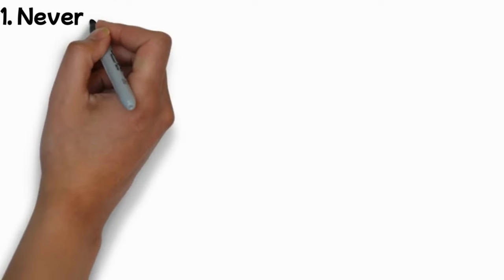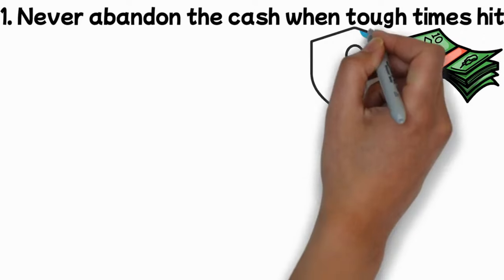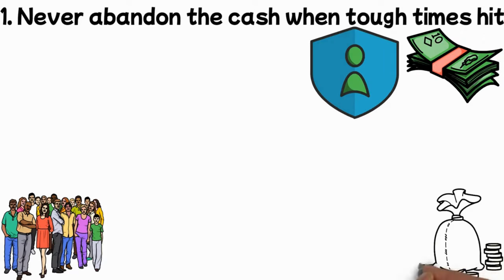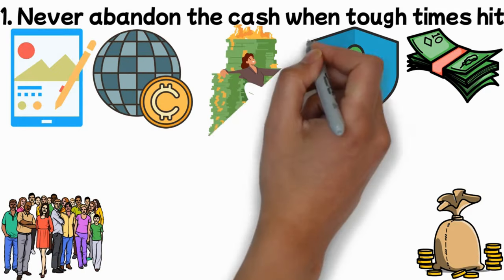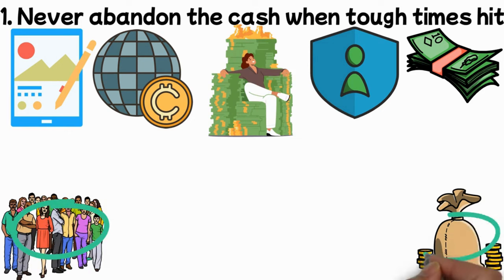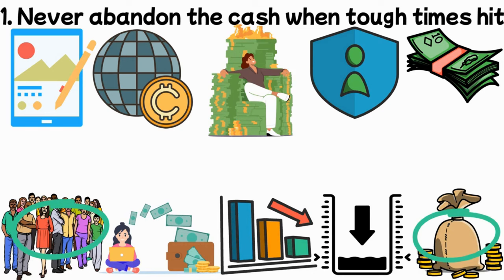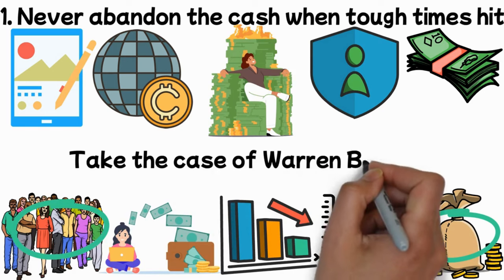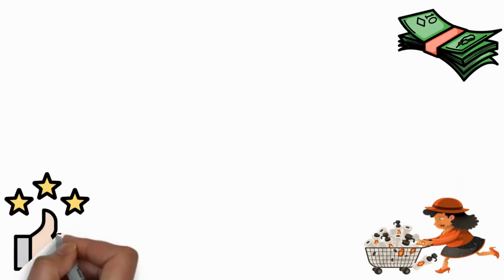Never abandon cash when tough times hit. Cash is comparable to a safety net. People often get enthusiastic about investing in things like digital art and cryptocurrencies when things are going well. However, even the wealthiest people begin liquidating their investments and hoarding cash when there's even the slightest sign of a downturn in the economy. Take the case of Warren Buffett - though not particularly showy, he is clever. He hoards a lot of money, holding it until the right moment.